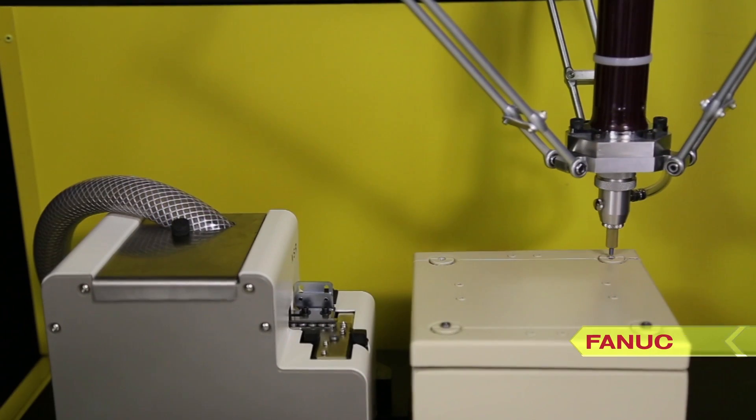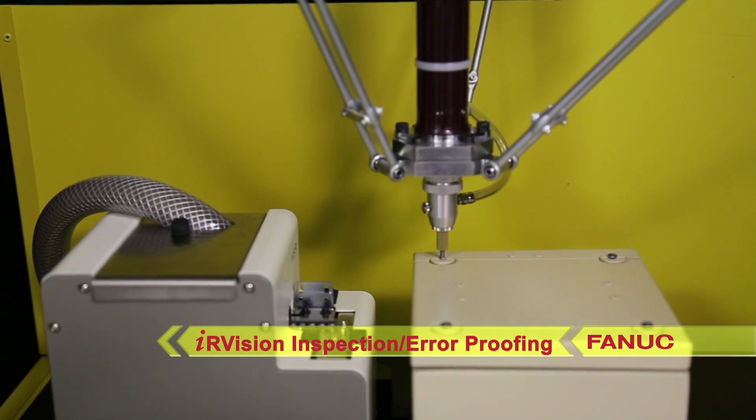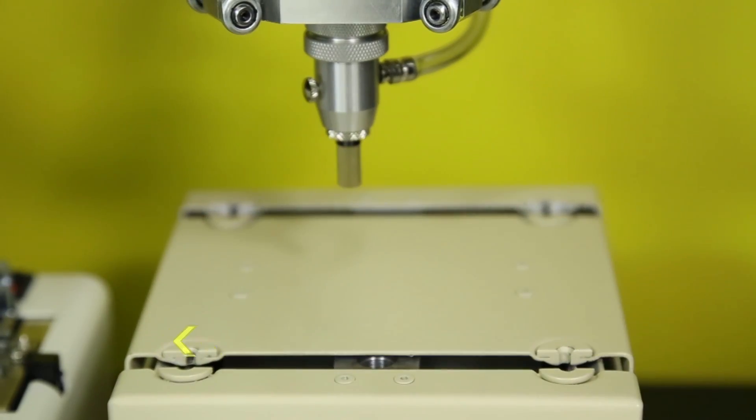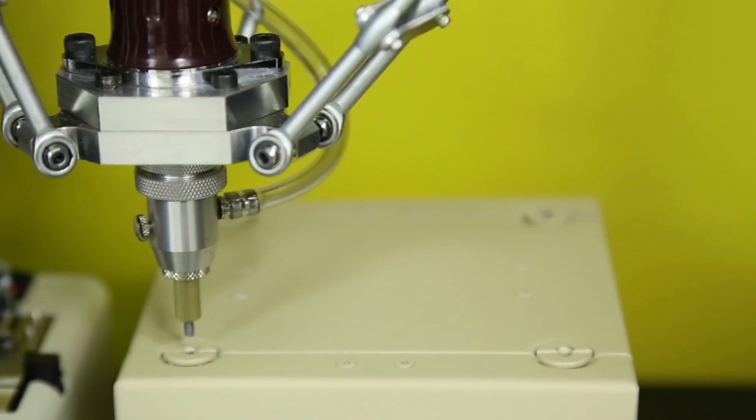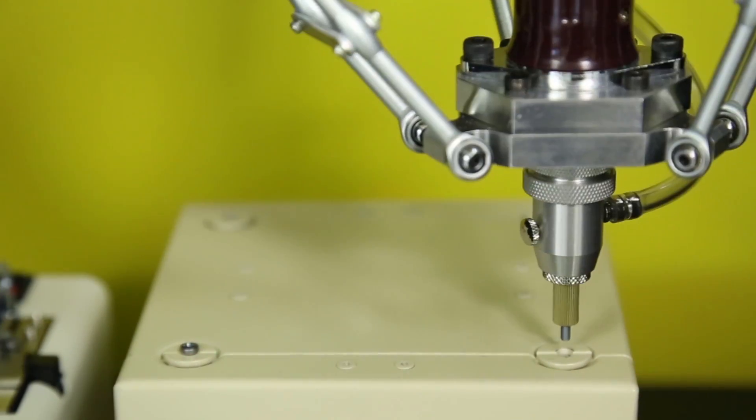It verifies this information using Fanuc IR Vision inspection and error-proofing software before moving in to pick up a screw. It takes just minutes to set up an application using this Fanuc IR Vision inspection system. No camera calibration is required.